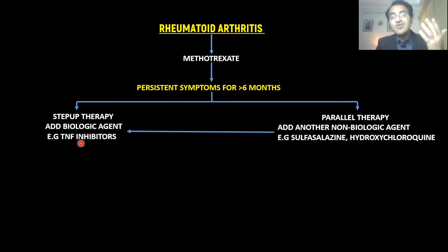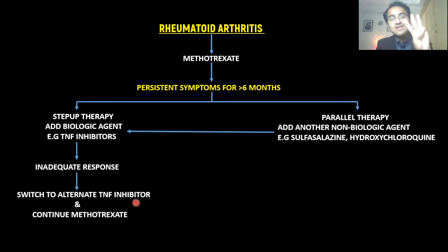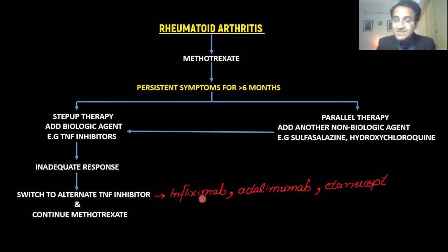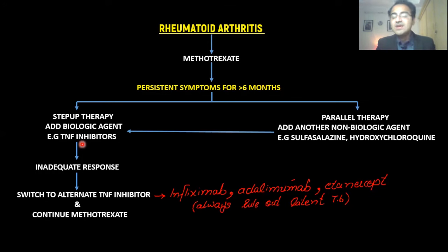If the patient is still not getting better with TNF inhibitor step-up therapy, you switch to an alternate TNF inhibitor and continue methotrexate with it. There are three TNF inhibitors effective in RA treatment: infliximab, adalimumab, and etanercept. Before starting TNF inhibitors, you must always rule out TB, because if the patient has latent TB, a TNF inhibitor can cause reactivation of TB.